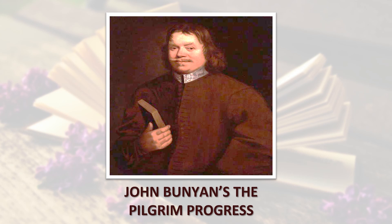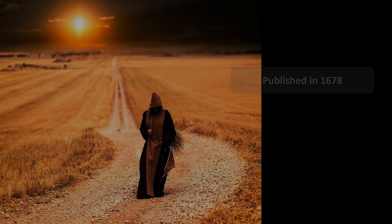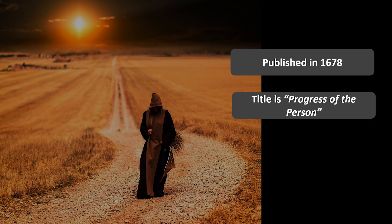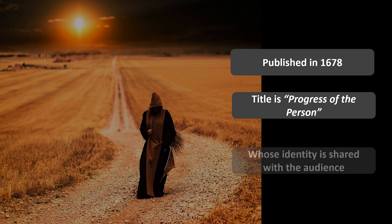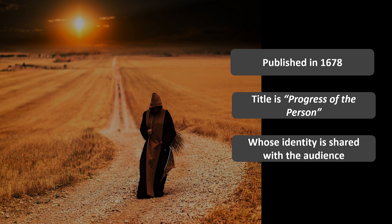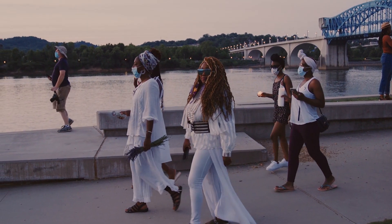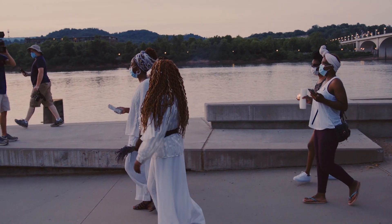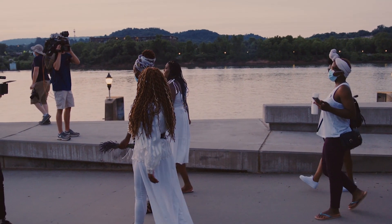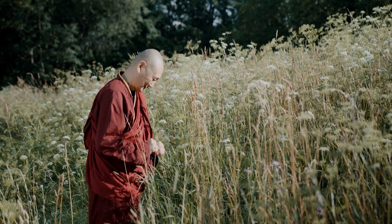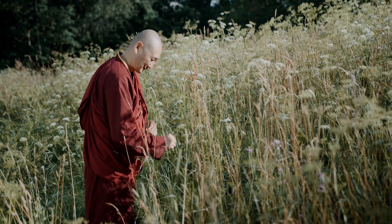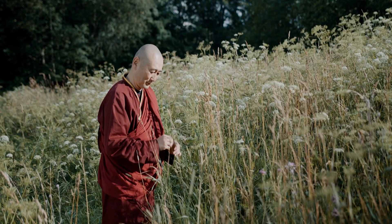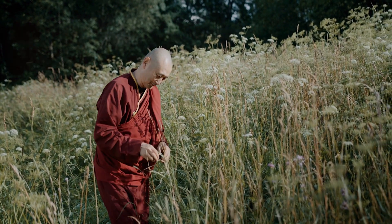The first one is John Bunyan's The Pilgrim's Progress, published in 1678 — the second half of the 17th century. As the title suggests, this is about the progress of a person. The person's name is not given, but his identity is shared with the audience. Pilgrim means someone on a holy mission, and the mission and the person must always agree — the person becomes just a carrier of the mission.